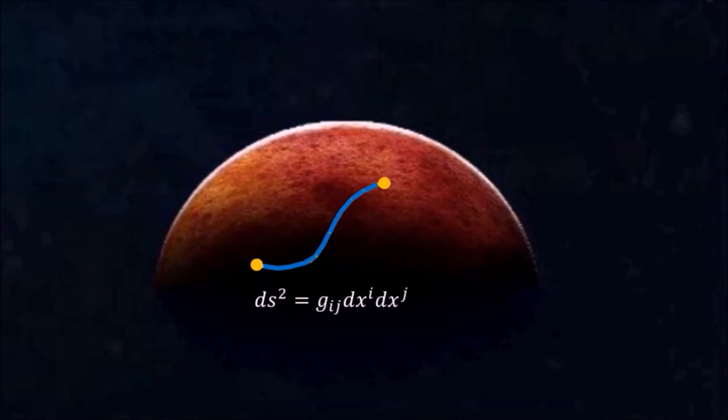Every path we choose will give us a specific s. We could say that s is a function of the path. Clearly, some paths give larger s than others, and one of the paths, the geodesic, will give the smallest s. So how do we go about finding it?